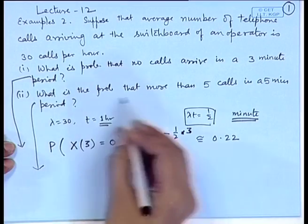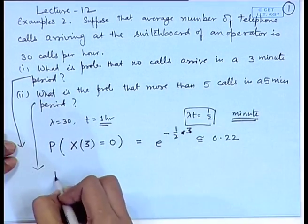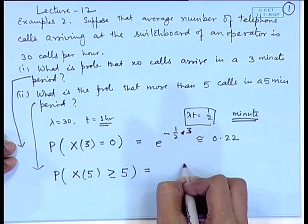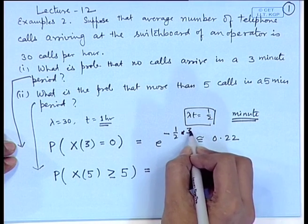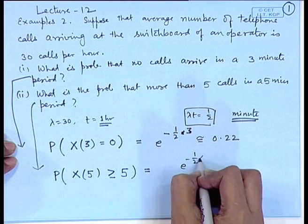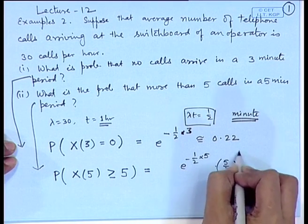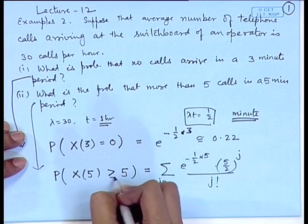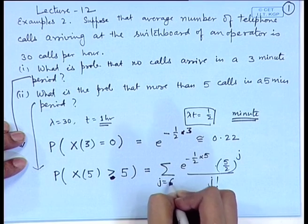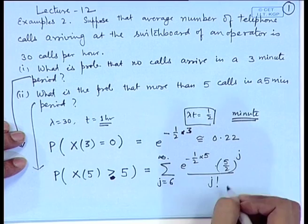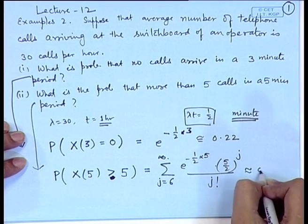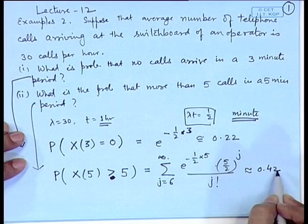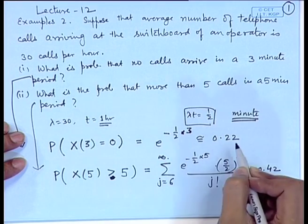For the second question: the probability of more than 5 calls in a 5-minute period means P(X₅ > 5), which is strictly greater than 5, so j goes from 6 to infinity. The Poisson distribution has parameter (1/2)×5 = 5/2. This gives e^(-5/2) × Σ (5/2)^j / j! for j=6 to ∞, which is approximately 0.42.